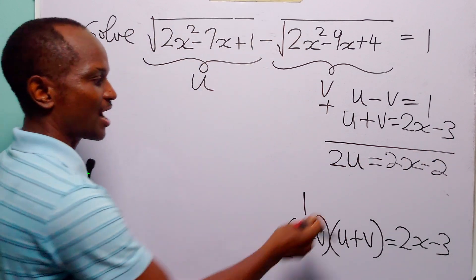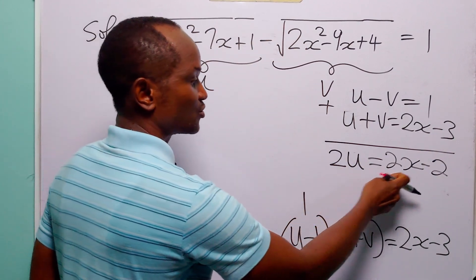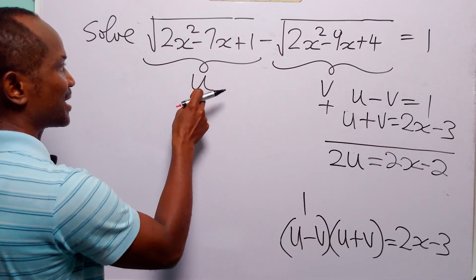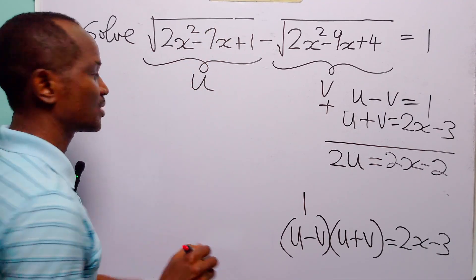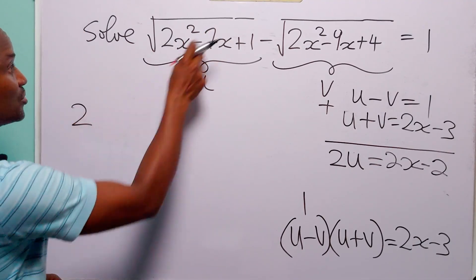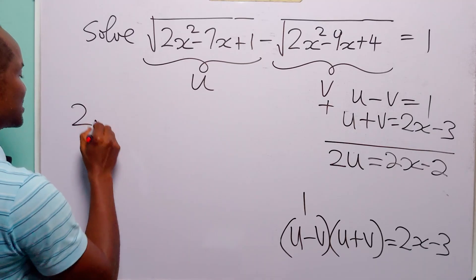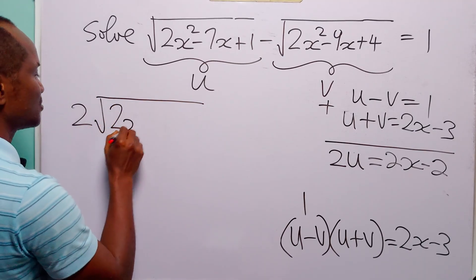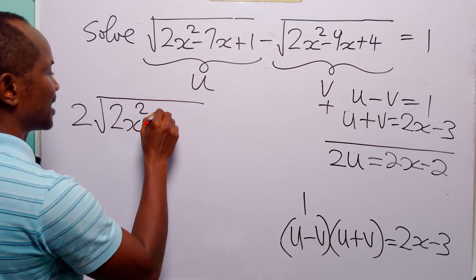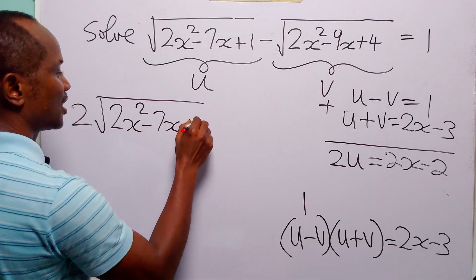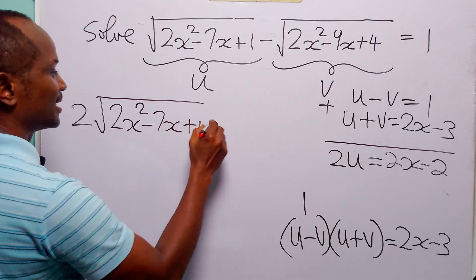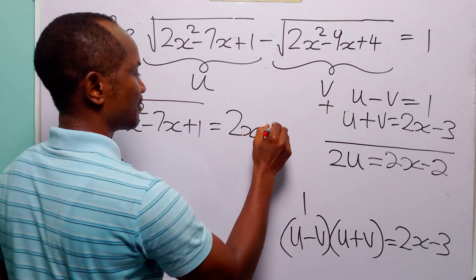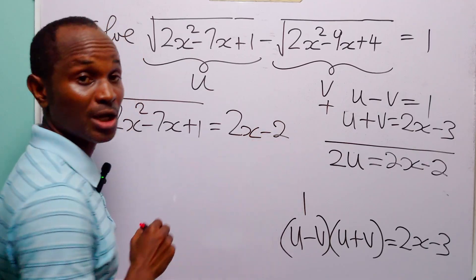Which is equal to 2x minus 2. So now we have that 2u is equal to 2x minus 2. But remember that u is the square root of 2x squared minus 7x plus 1. So what we have is that 2 times the square root of 2x squared minus 7x plus 1 is equal to 2x minus 2.